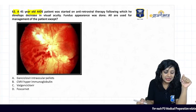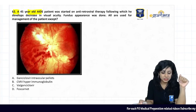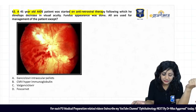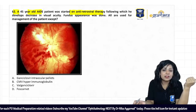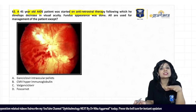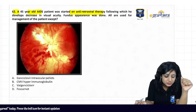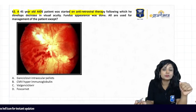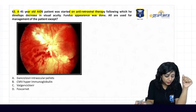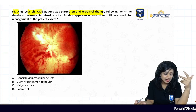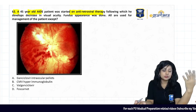A 45-year-old HIV-positive patient was started on antiretroviral therapy, following which he develops a decrease in visual acuity. A fundus examination was done. All of the following were used for the management of the patient except: ganciclovir intraocular pellets, CMV hyperimmunoglobulin, valganciclovir, and foscarnet.